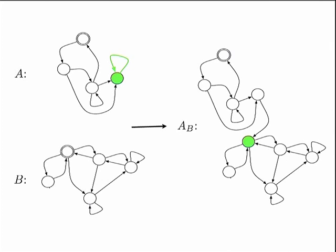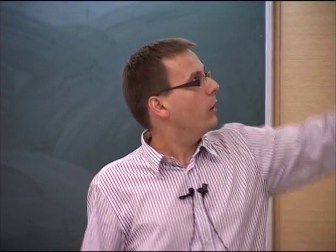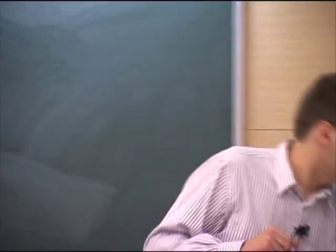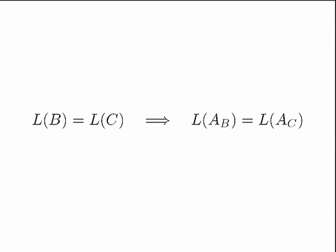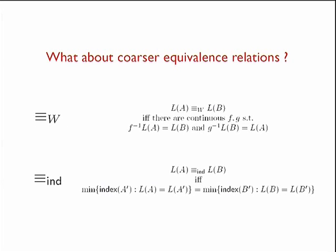It's a kind of obvious observation that if I take a different automaton B' that is equivalent to B, what I get is again an equivalent automaton — changing a sub-component to an equivalent one doesn't change the semantics of the whole. But what if I look at coarser equivalence relations? Let's look at two such relations.